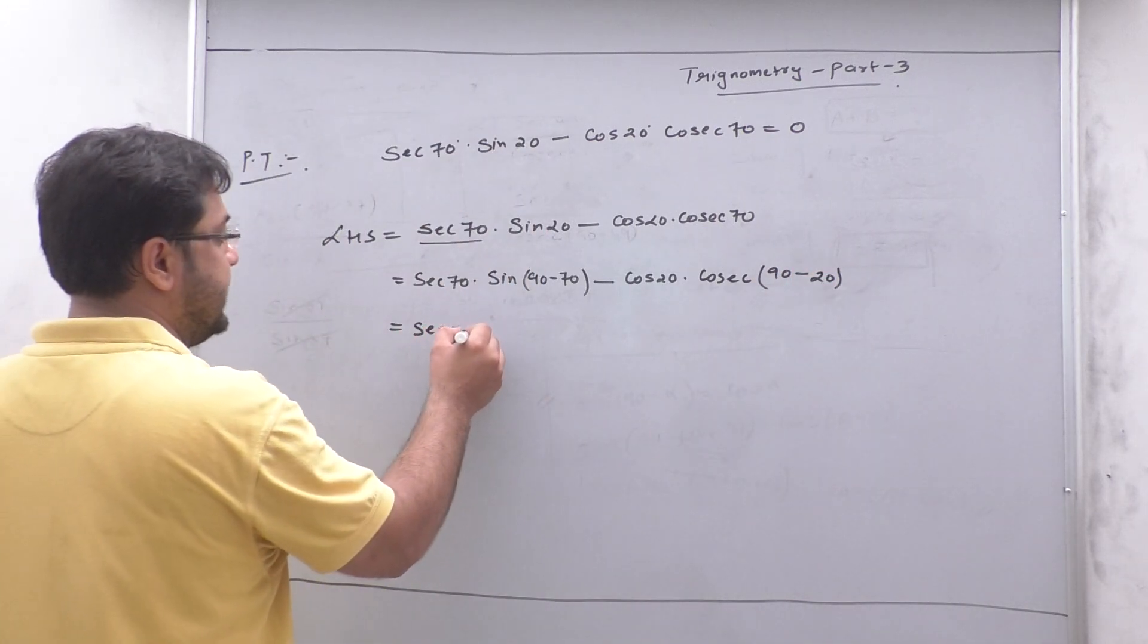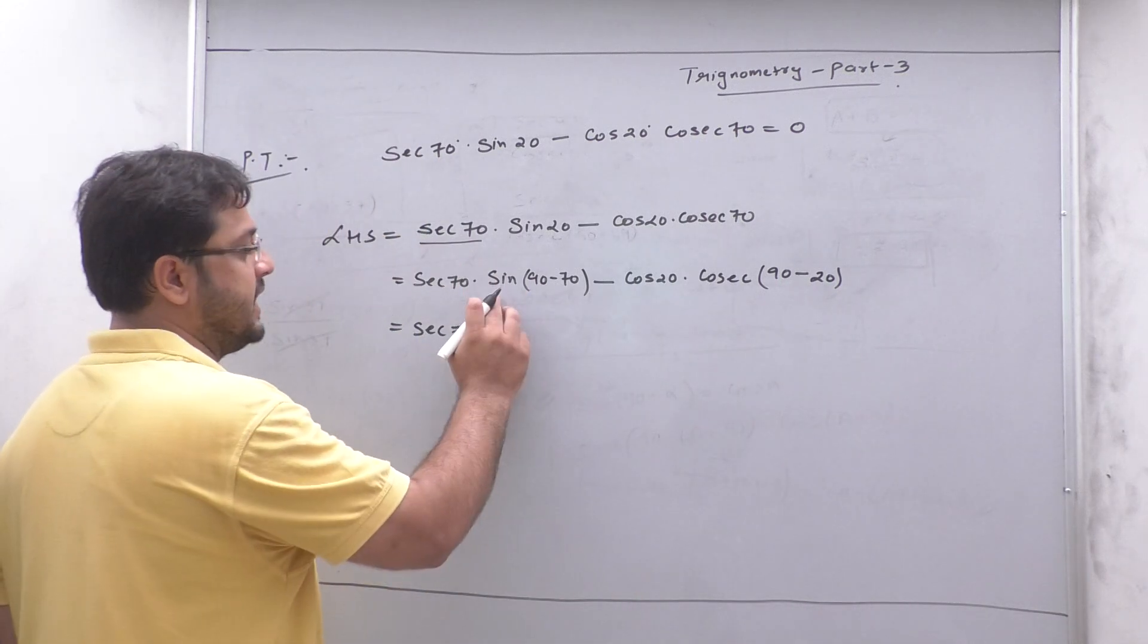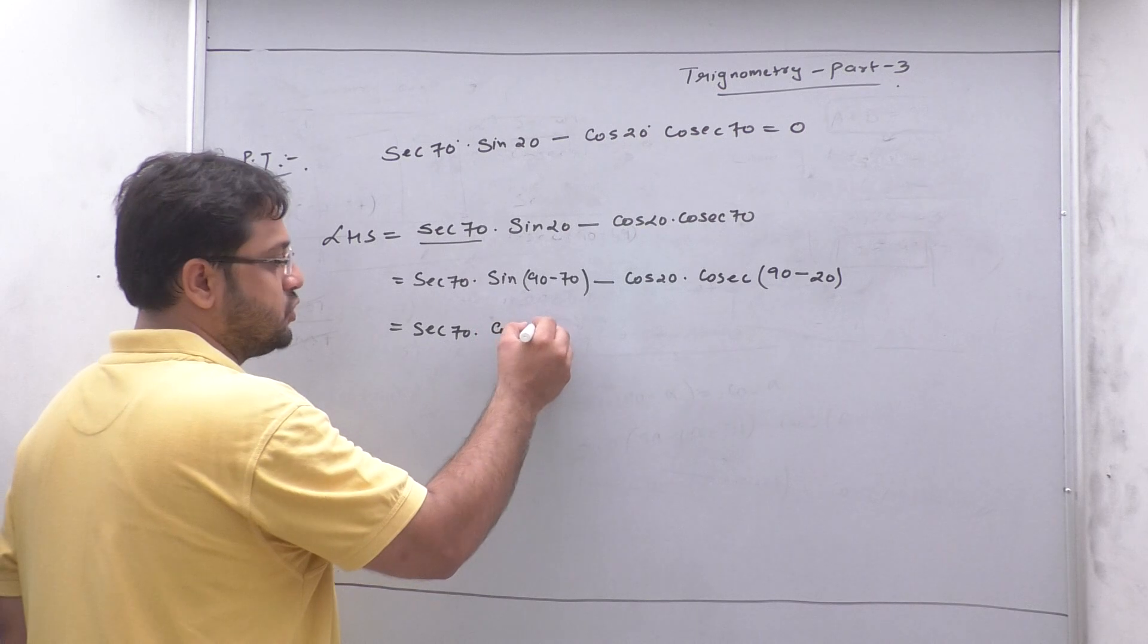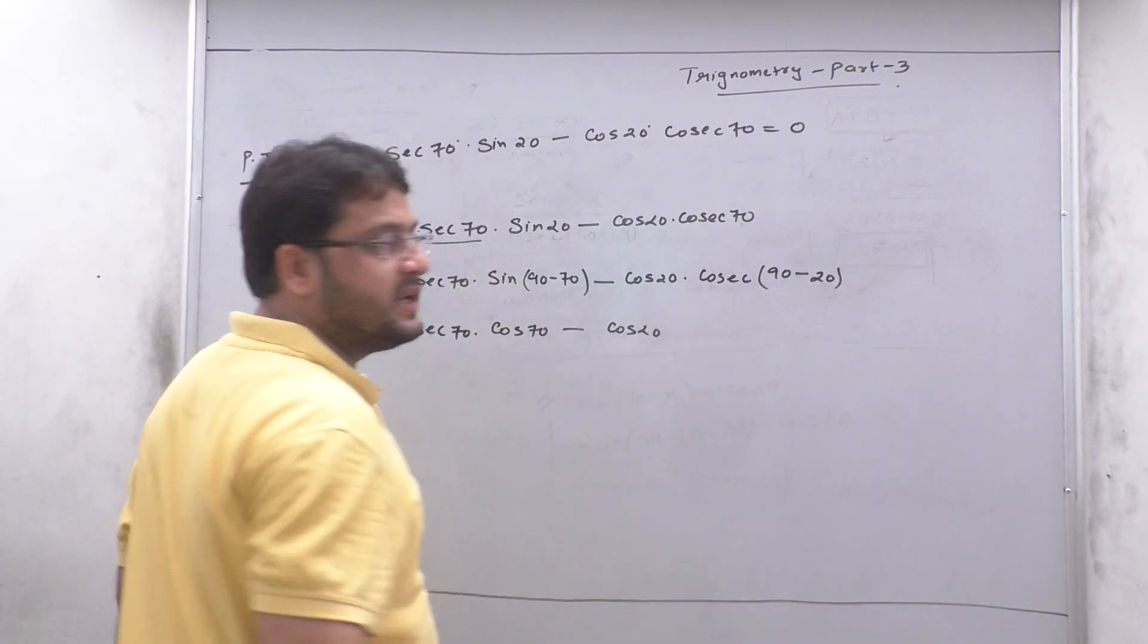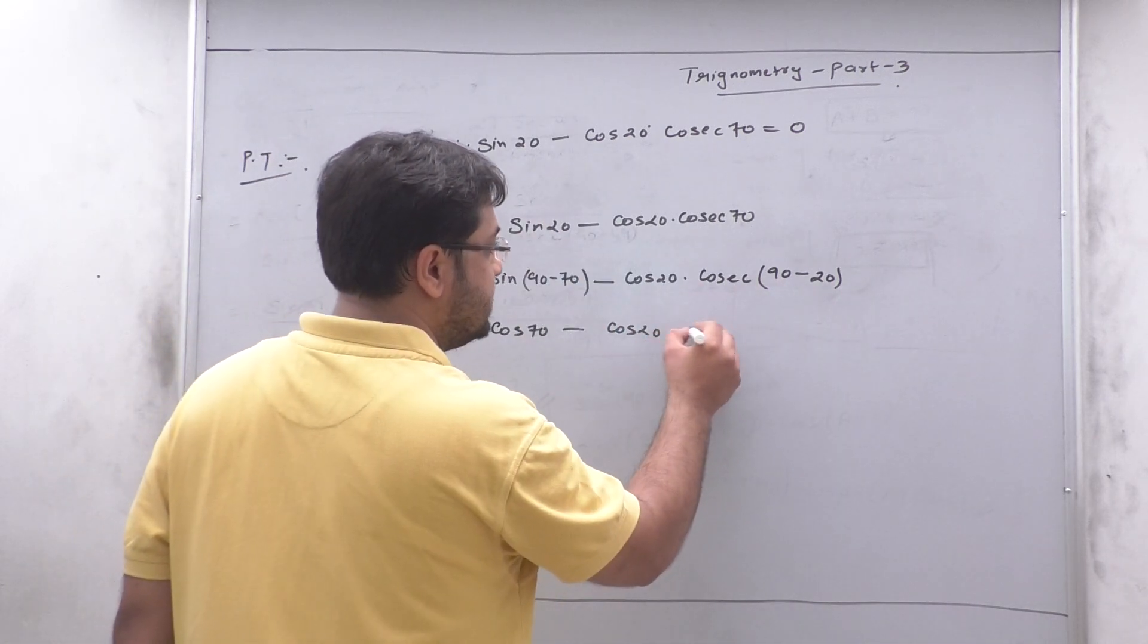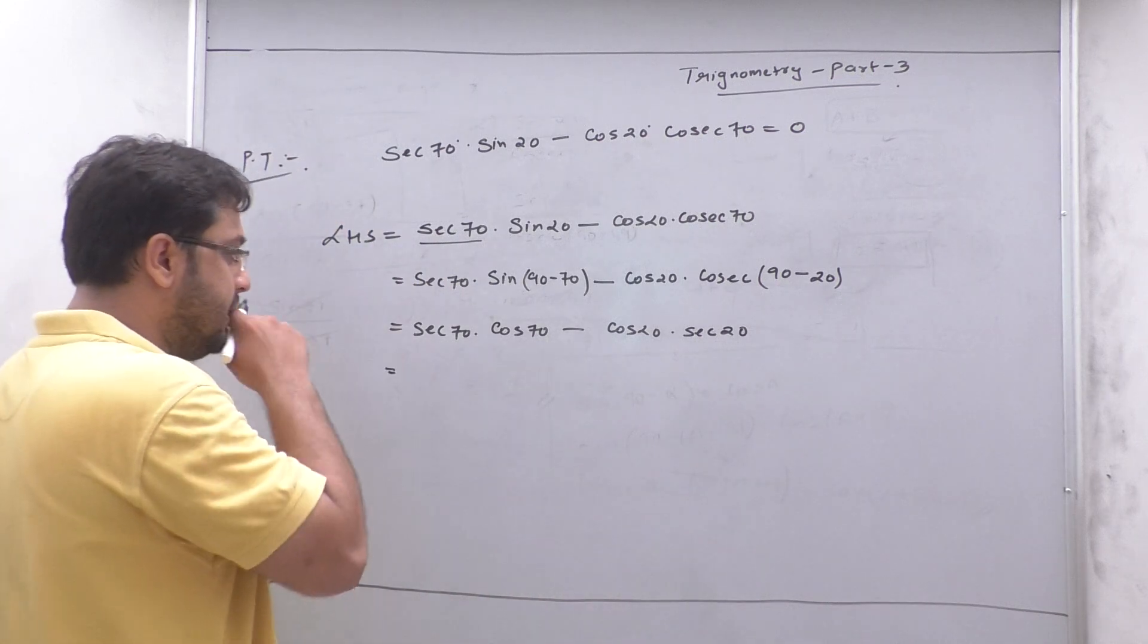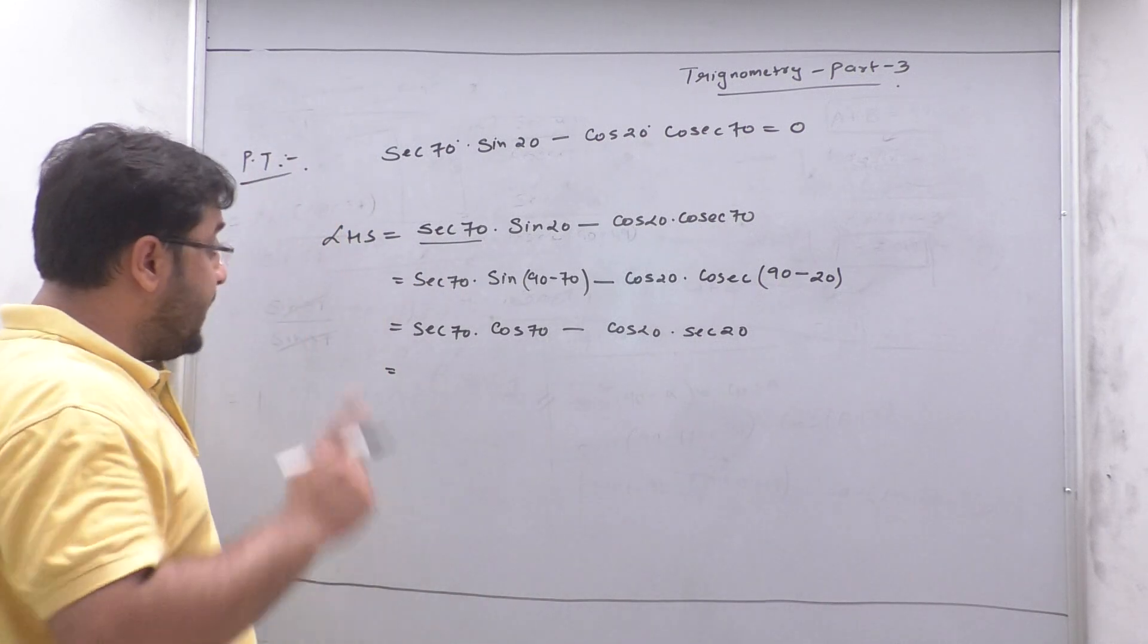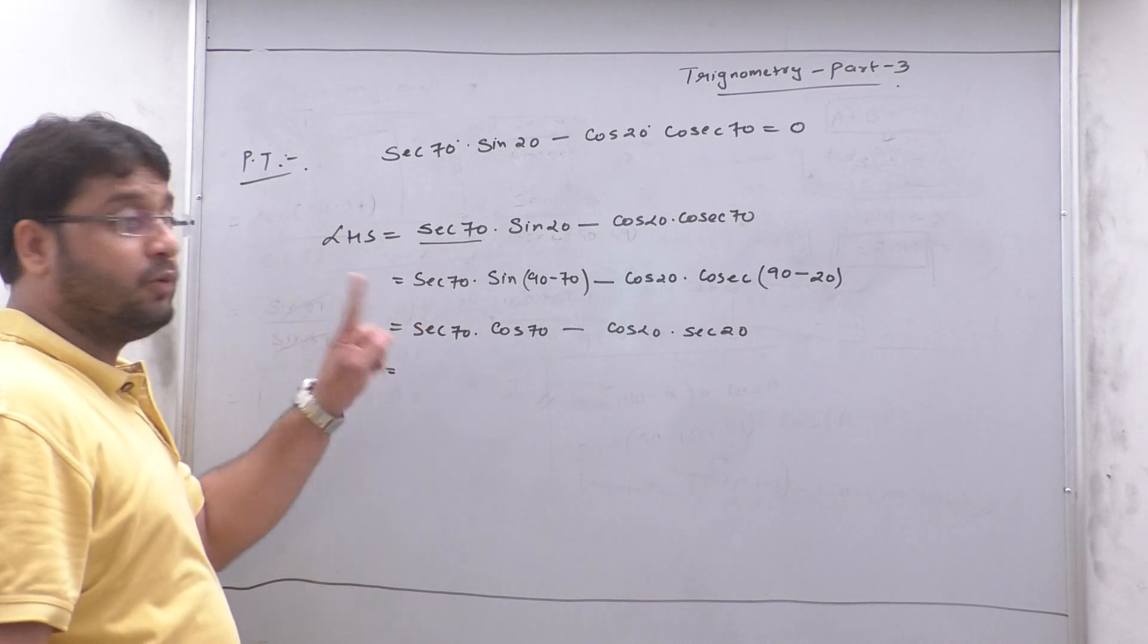Now, if this will be sec 70... What does it mean? Cos 70. Cos 70. This is cos 20. Cos 70, it means sec. So what is sec 70? I said that the fact is sec.